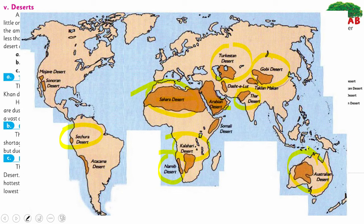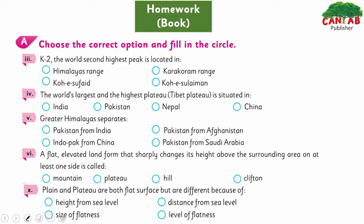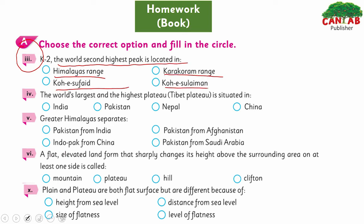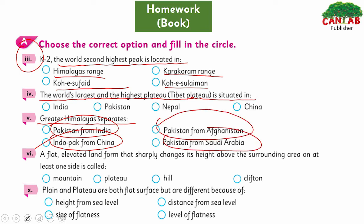Now there is homework from your book. From the MCQs: K2, the world's second highest peak, is located in which range — Himalayas, Karakoram, or Sulaiman? The world's largest and highest plateau is situated where? Greater Himalayas separates the Indo-Pak subcontinent from which country — China, Afghanistan, or Saudi Arabia? A flat elevated landform that sharply changes its height above the surrounding area on at least one side is called — mountain, plateau, hill, or Clifton?